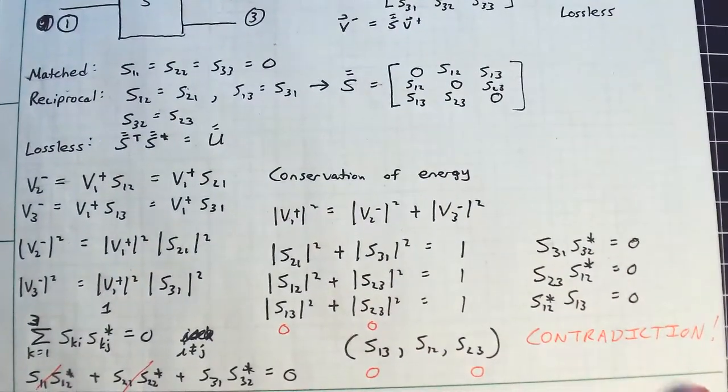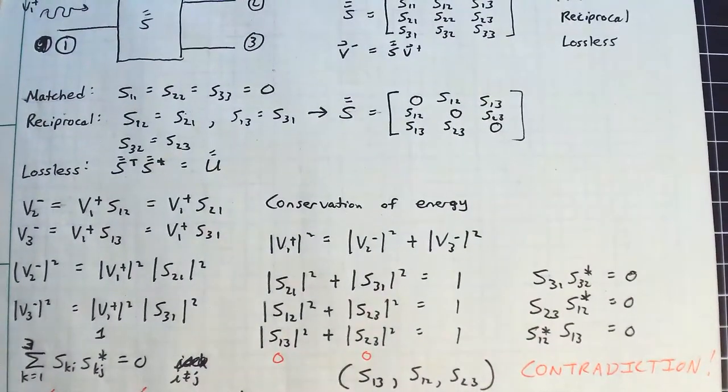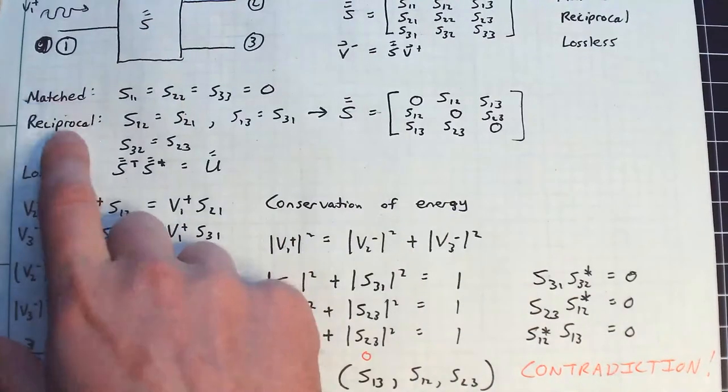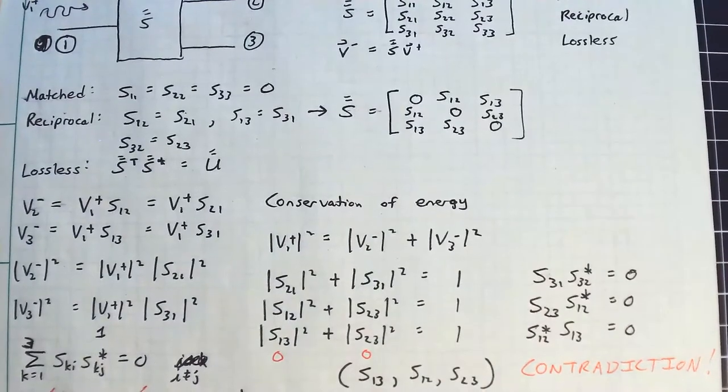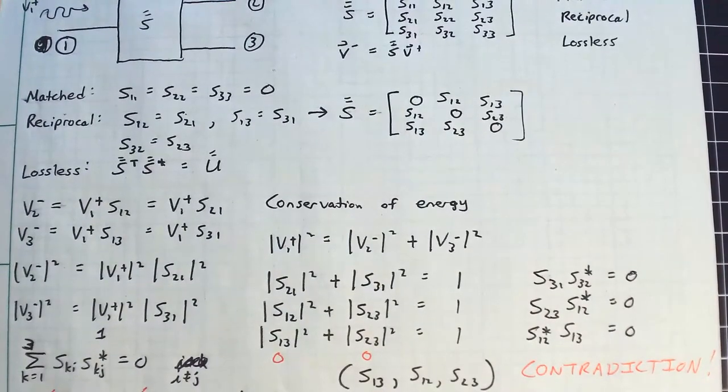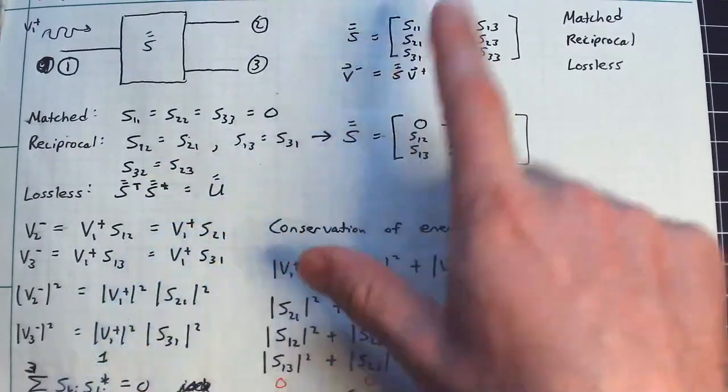So that leads us to a very important property of three-port networks. No three-port network can simultaneously be matched, reciprocal, and lossless. It is simply not possible to do that.